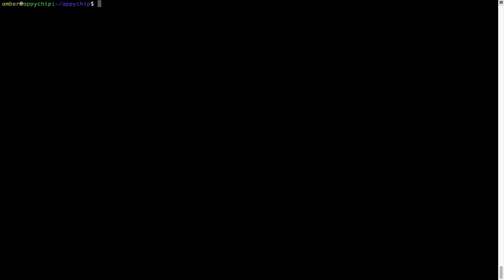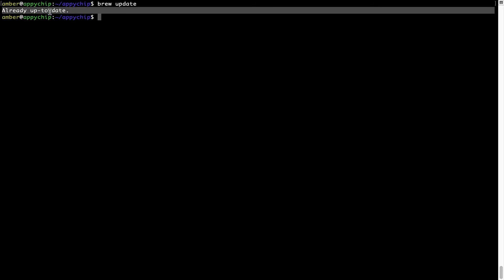Now let's update the package database locally by pulling the metadata of the latest packages from the central brew repository. This should typically take less than a minute to complete depending on your internet connection speed. To do so, simply type the command brew update and press enter. As you can see, my local brew database is already up to date because I just installed brew on my system.